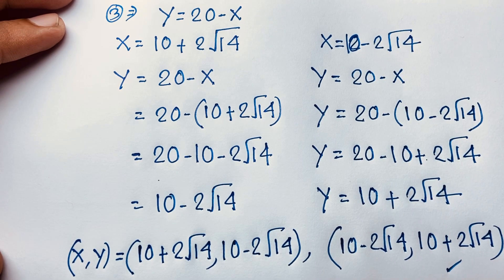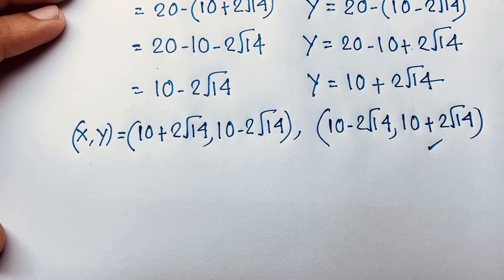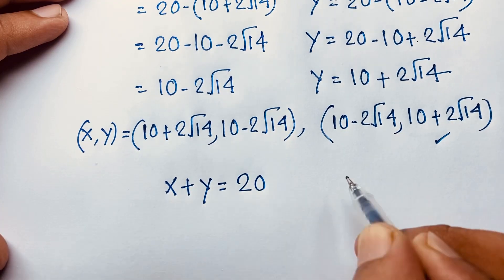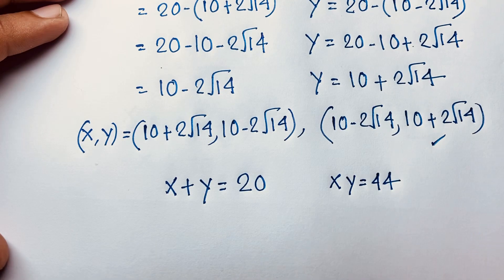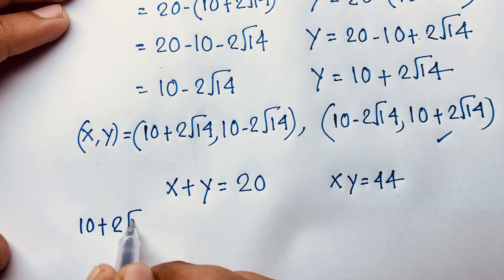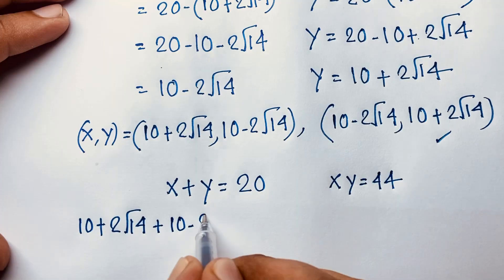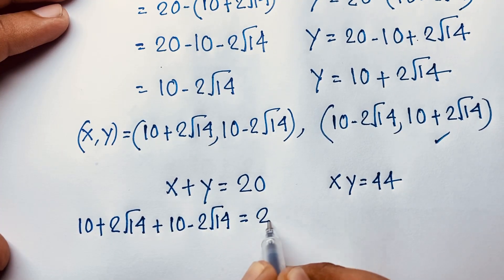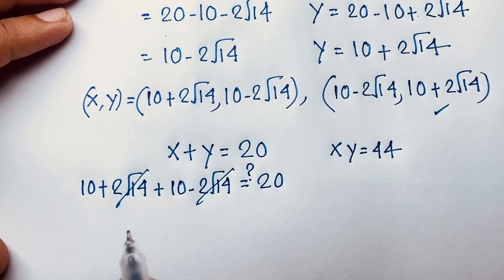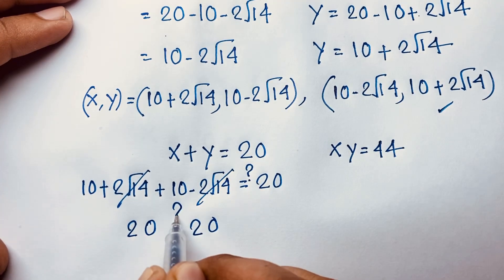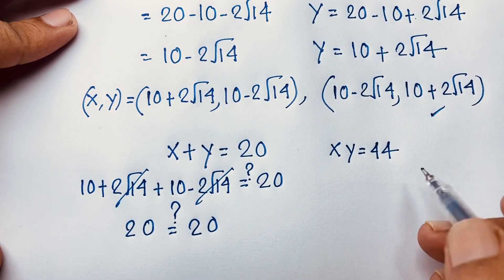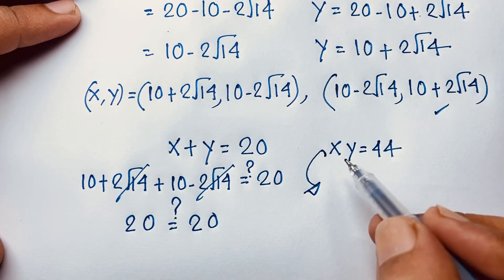Our final solution is: when x equals 10 plus 2 square root 14, then y equals 10 minus 2 square root 14; and when x equals 10 minus 2 square root 14, then y equals 10 plus 2 square root 14. Let's verify with x plus y equals 20: (10 plus 2 square root 14) plus (10 minus 2 square root 14) equals 20. The square root terms cancel, giving 10 plus 10 equals 20. Left hand side equals right hand side.